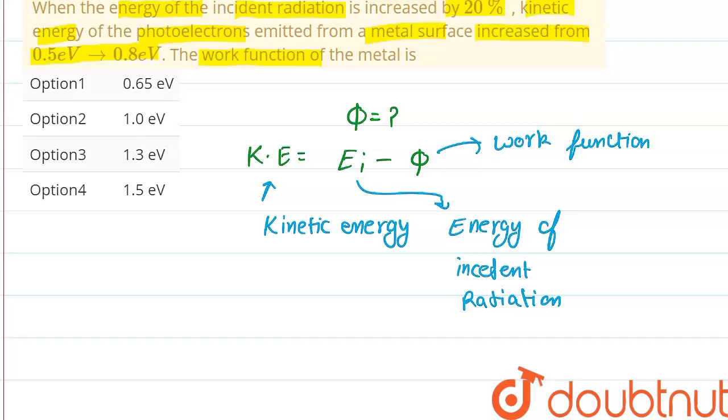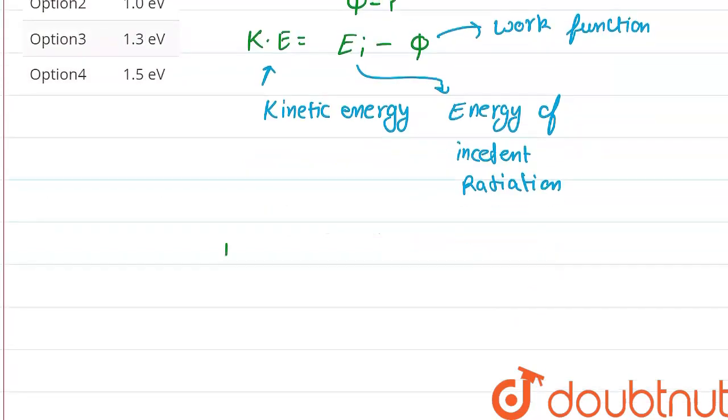Now from this we can write it as, the Ei that is energy of incident radiation, come to left side, it will equal to kinetic energy plus work function.